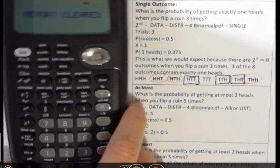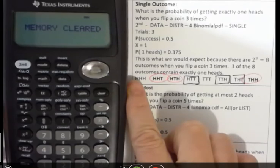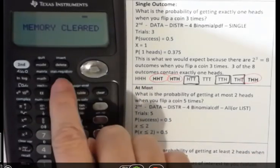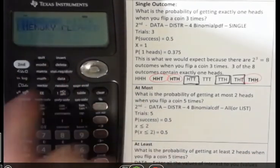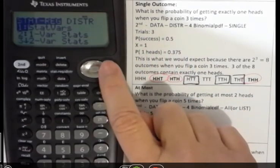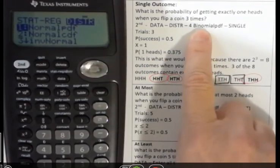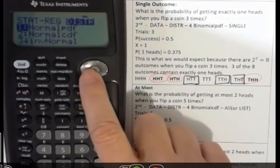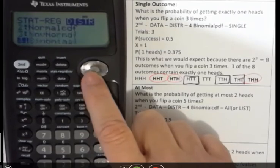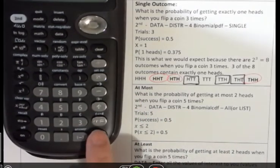Now I'm going to follow the directions. Second function data, because second function puts you above the actual key of data. So second function data and then over to distribution. I'm going to use the arrow key to go over and then I want to go down to number four on the list, which is binomial PDF. I'm going to go down to number four and hit enter.